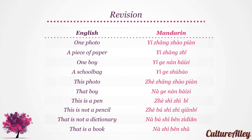Now let's take a look at the phrases we learned throughout the last lesson. One photo translates to 一张照片, and a piece of paper becomes 一张纸. One boy becomes 一个男孩子, while a school bag translates to 一个书包. This photo will become 这张照片.